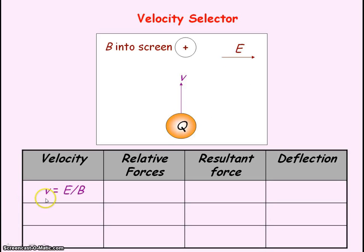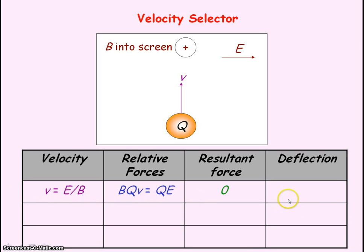So we've seen that if the velocity of the charged particle equals E divided by B, then the magnetic force will equal the electric force. And so the resultant force on the charged particle will be zero, and so the charged particle will pass through the velocity selector undeflected.